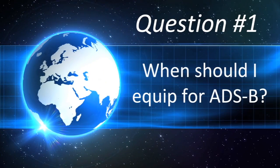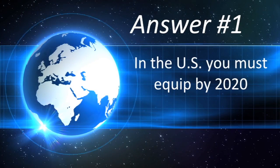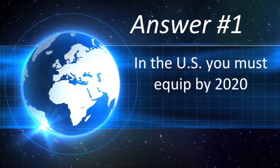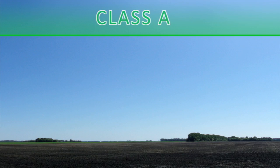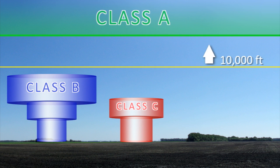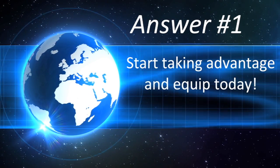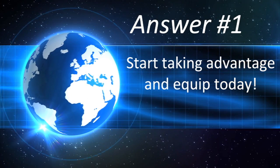Let's get started with the number one question on the list: When should I equip for ADS-B? When you're required to equip depends largely on where you fly. In the US, you must equip with ADS-B Out by 2020 if you fly in Class A, B, C, or E above 10,000 feet MSL. But in other parts of the world, you may be required to equip much sooner. Regardless of regulations, you could equip today to start taking advantage of the many benefits of ADS-B.